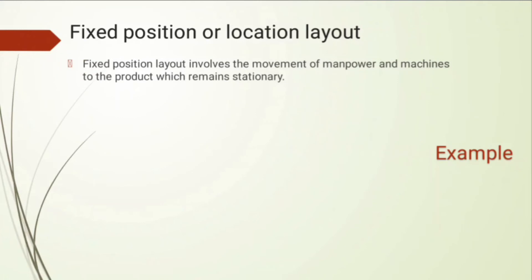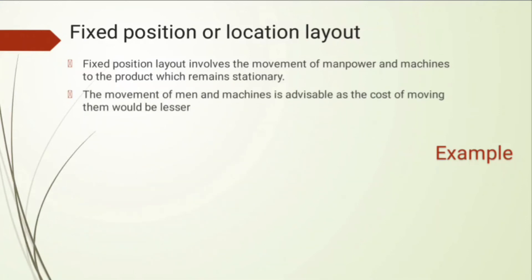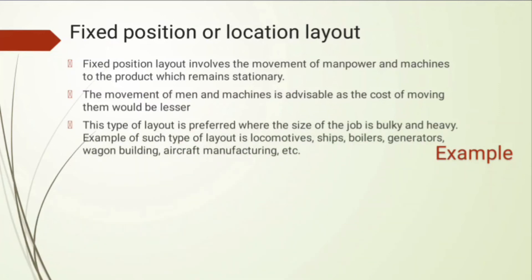The third type is the fixed position or location layout, in which manpower and machines move to the product rather than the product moving to the machines. This is because the product is very heavy or huge in size — for example, manufacturing a ship or an airplane. Moving resources to the product is more advisable than moving the product itself, as the cost of moving resources is lesser. This layout is preferred for bulky and heavy jobs such as ships, boilers, generators, wagons, buildings, and aircraft.